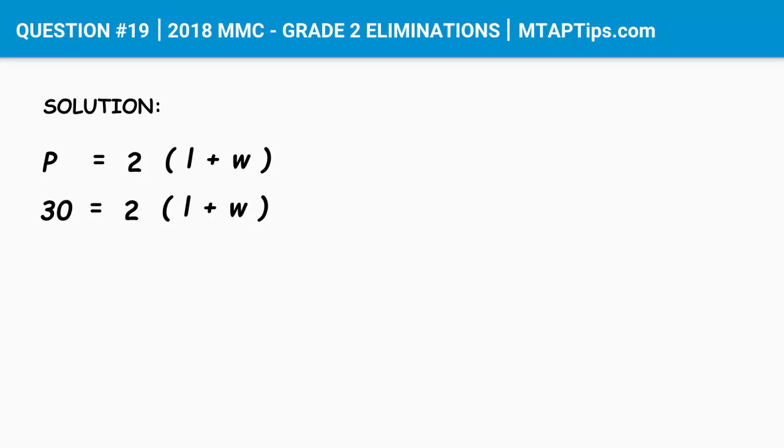So in this case, we'll have 30 and we're going to move the 2. And this 2 is the multiplier of length plus width, so it will become a division. So we got 30 divided by 2 equals length plus width. Now to simplify this again, we got 30 divided by 2 is 15, which equals length plus width.